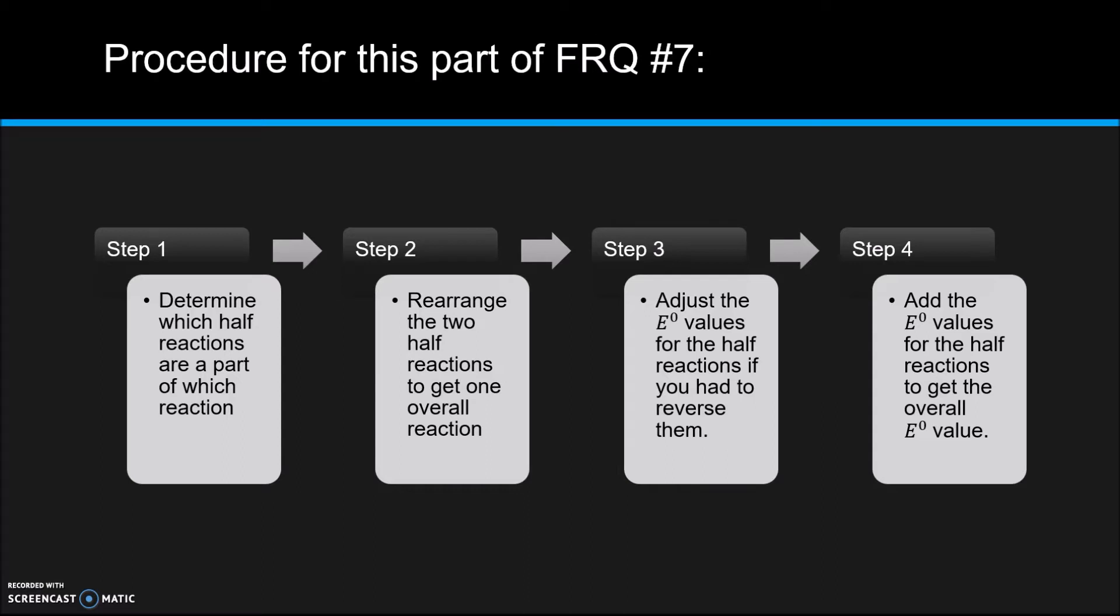And then in this third step, we're going to adjust the E⁰ values for the half reactions. So if we had to flip one of the reactions from, let's say, reduction to oxidation in order to get the overall reaction, we're going to reverse the sign on the E⁰. For example, if it was plus 5, it's going to become minus 5. Step 4, we're going to add the E⁰ values for the half reactions to get the overall E⁰ value of the cell.